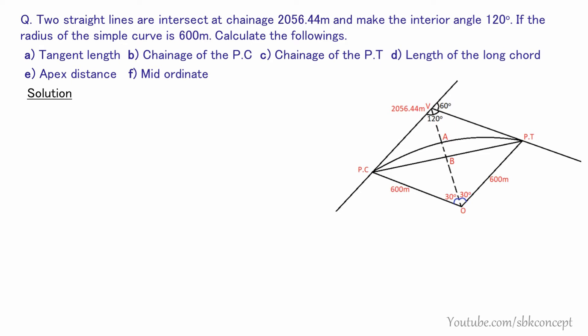Referring to the figure: on the left side we have the PC — the point of curve. The line to the left is the back tangent, and the line toward PT is the forward tangent.